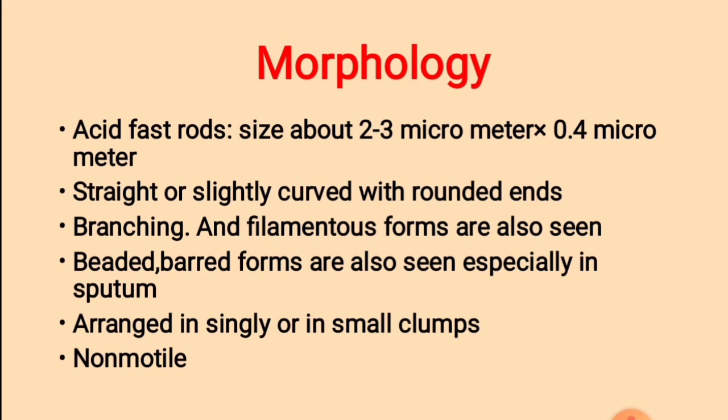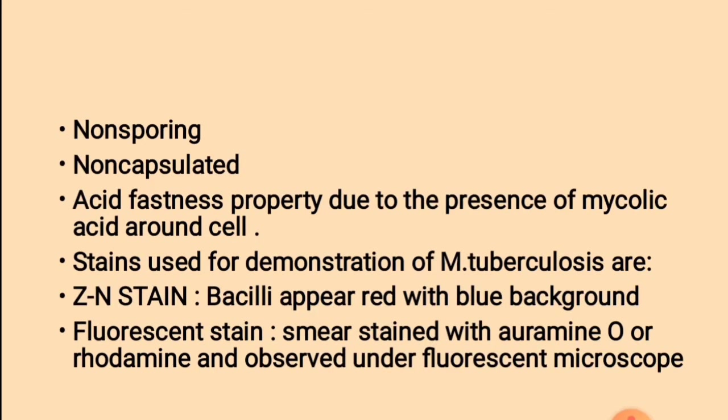They are arranged singly or in small clumps. They are non-motile, non-sporing, and non-capsulated. One important feature of Mycobacterium tuberculosis is that they are acid-fast organisms. The acid-fast property is due to the presence of mycolic acid around the cell.